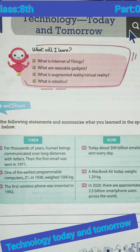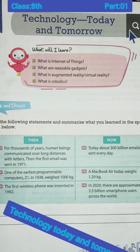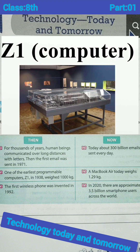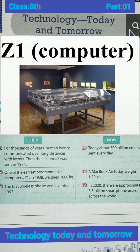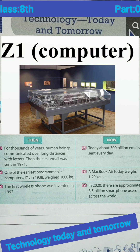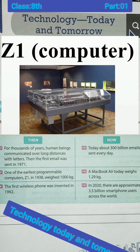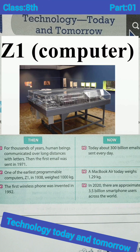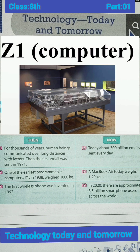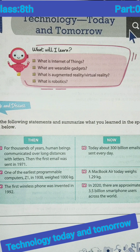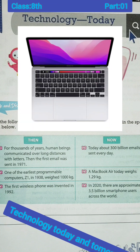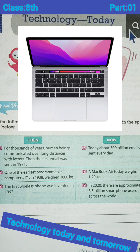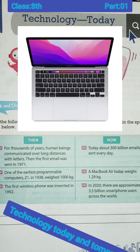One of the earliest programmable computers, the Z1, in 1938 weighed 1000 kg. So that programmable computer named Z1, in that year, weighed one thousand kilograms. Now a MacBook Air today weighs only 1.29 kg.